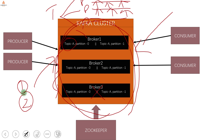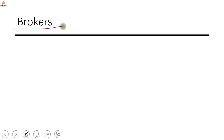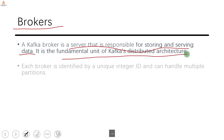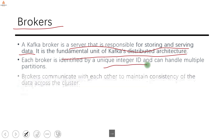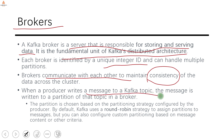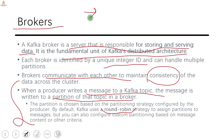That's the Kafka ecosystem at a high level — a simple architecture that's easy to get started with. Now let's go through each component in detail. A broker is a server responsible for storing and serving data; it is a fundamental unit of Kafka's distributed architecture. It is identified by a unique integer ID, and brokers communicate with each other to maintain data consistency across the cluster. When a producer writes a message to a Kafka topic, the message is written to a partition of that topic. The partition is decided by a round-robin strategy by default, but a custom partitioning strategy is also possible.